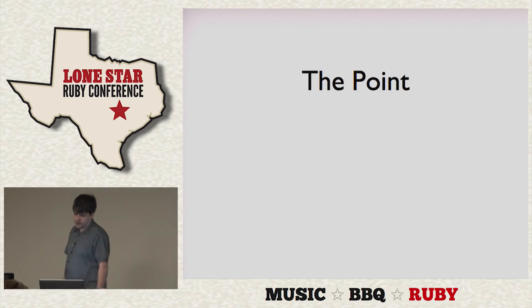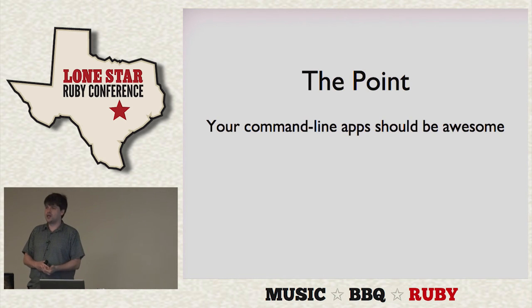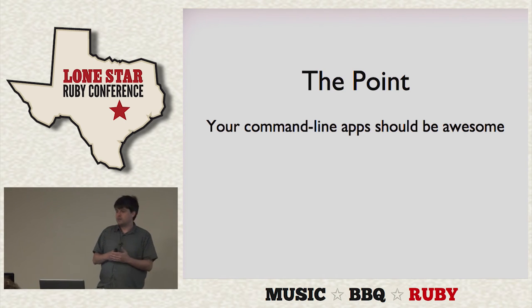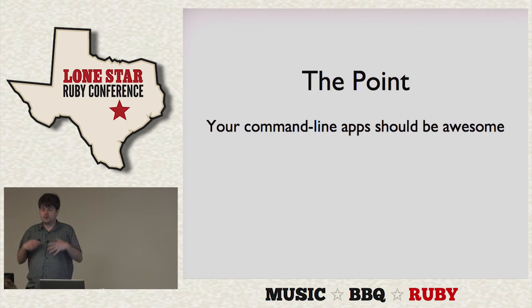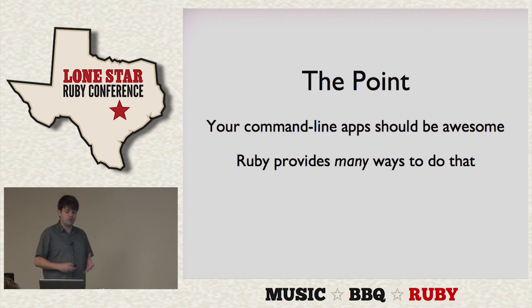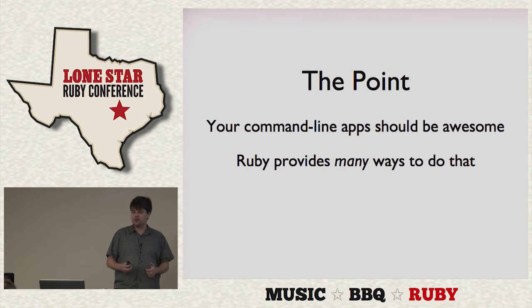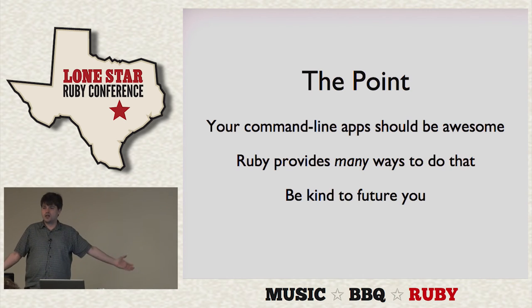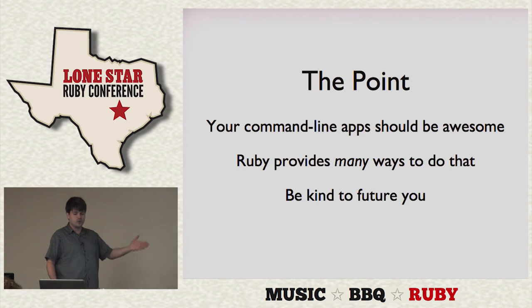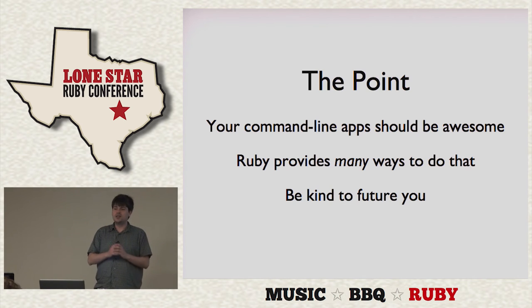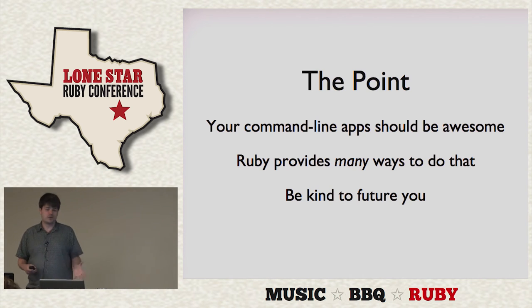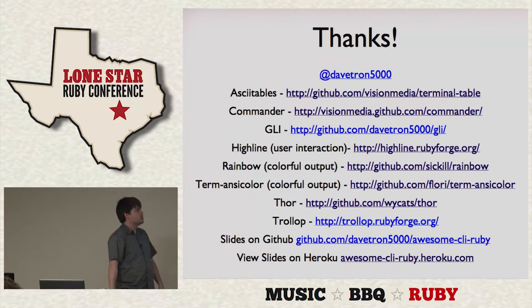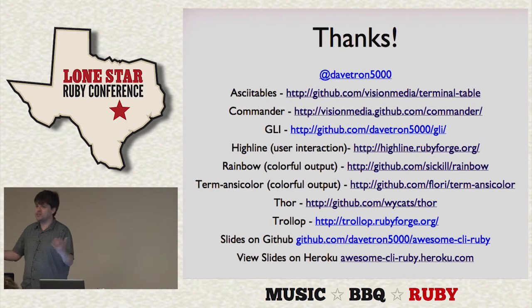So in summary, the whole point of this is that you should approach your command line applications and want to make them awesome. You should approach them with the same kind of rigor and professionalism that you would your regular applications, because it's not that hard. Ruby provides a lot of ways to make it really easy, so it doesn't take that much effort to bring your app up to the next level. And really, it's all about being selfish — it's all about being nice to future you, because future you is going to have to deal with this. Here's a link to all of the gems I talked about. Thanks.